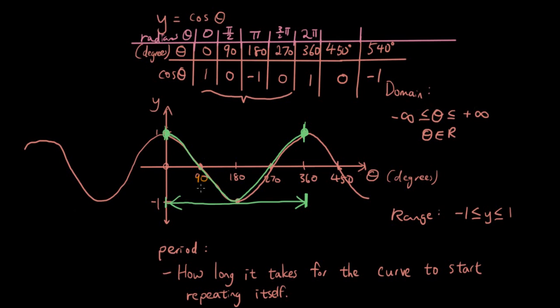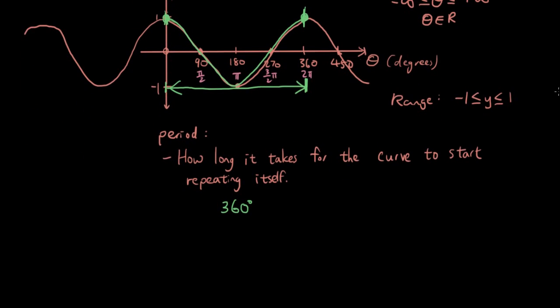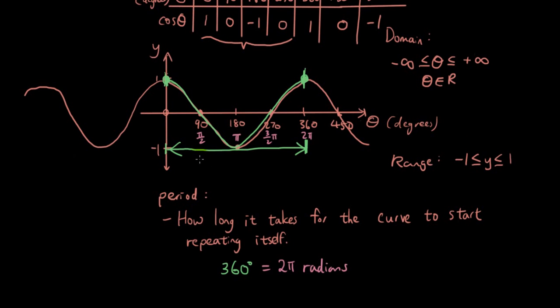So you can say 90 degrees is pi over 2 radians, 180 degrees is pi radians, 270 degrees is 1.5 pi radians, 360 degrees is 2 pi radians. You can say the domain is the same, and the period would be 2 pi radians, the period of this graph, how long it takes for the curve to start repeating itself.